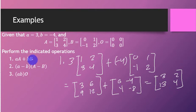So, therefore, AA plus BB would be 3, 2, 13, and 4.